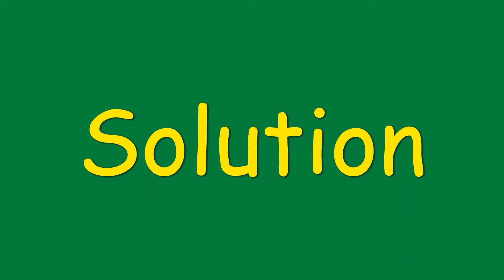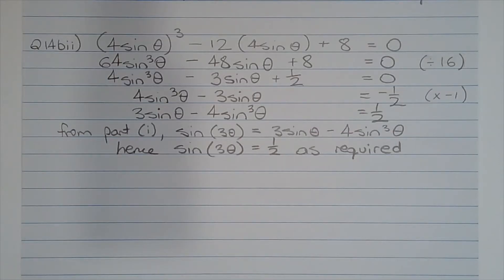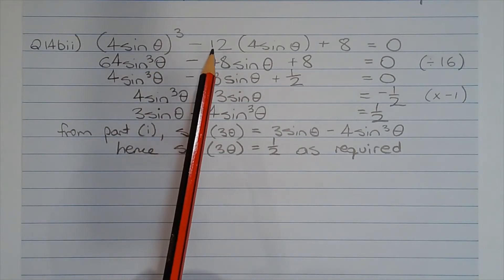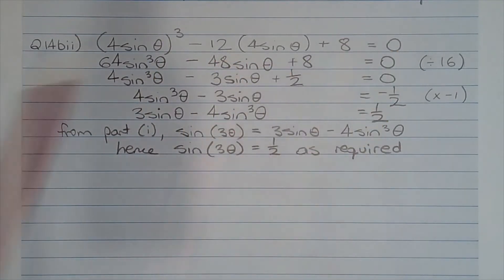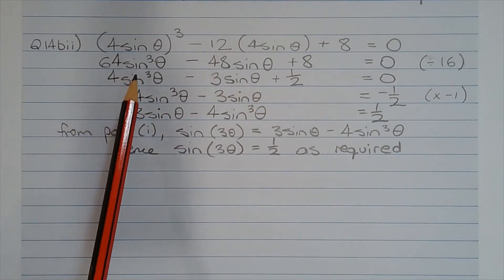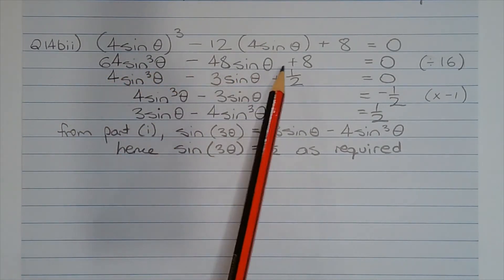Part 2. By letting x equals 4 sin theta in the cubic equation x cubed minus 12x plus 8 equals 0, show that sin 3 theta equals 1/2. Substituting 4 sin theta for x in the cubic equation x cubed minus 12x plus 8 equals 0, we get 4 sin theta to the power of 3 minus 12 multiplied by 4 sin theta plus 8 equals 0. Expanding the brackets, we get 64 sin cubed theta minus 48 sin theta plus 8 equals 0.